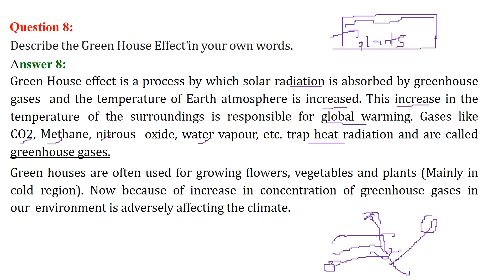When the ice melts, the water level will increase. All the islands which are very close to the sea or glaciers will be submerged in water. These gases are therefore called greenhouse gases, and they are used for growing flowers, vegetables, and plants mainly in cold regions at upper and lower latitudes.